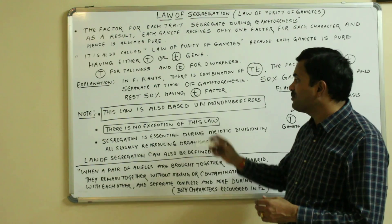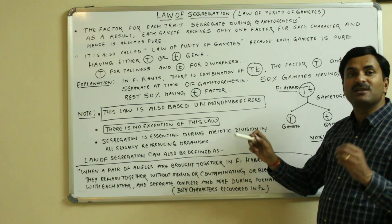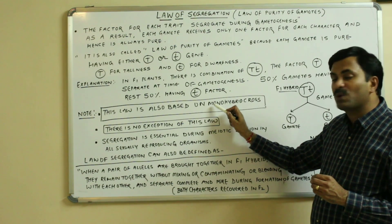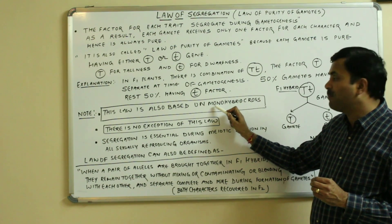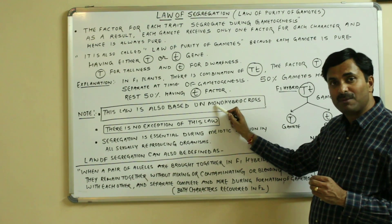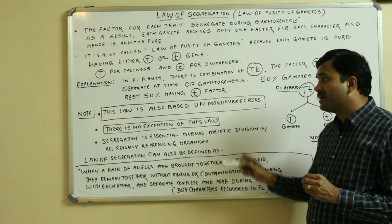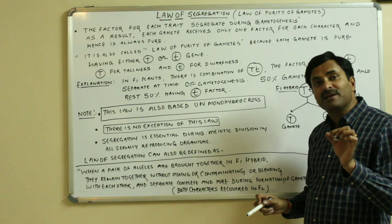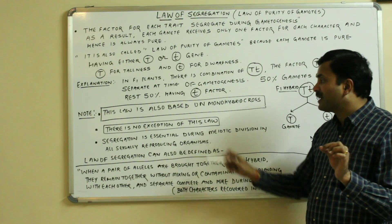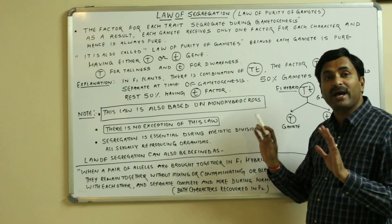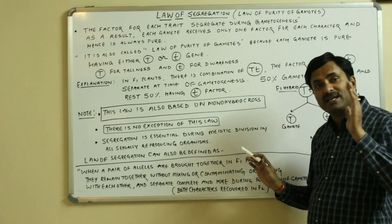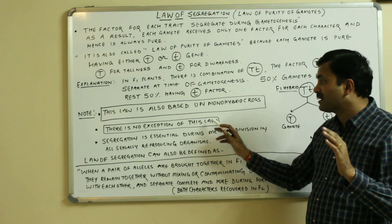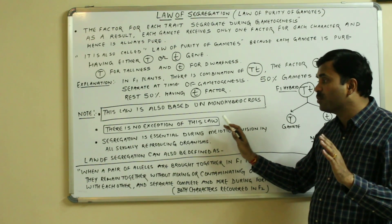Like the law of dominance, the law of segregation is also based on the monohybrid cross. You must remember that this law of segregation is a universal law and it has no exception. We have seen that in the law of dominance, exceptions were there, but here there is no exception.